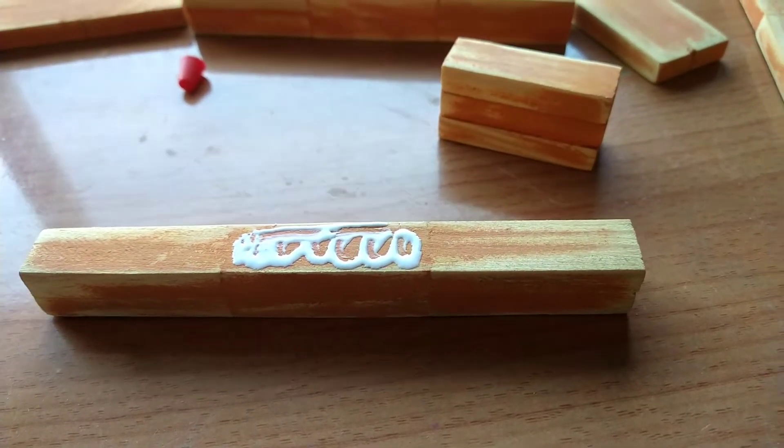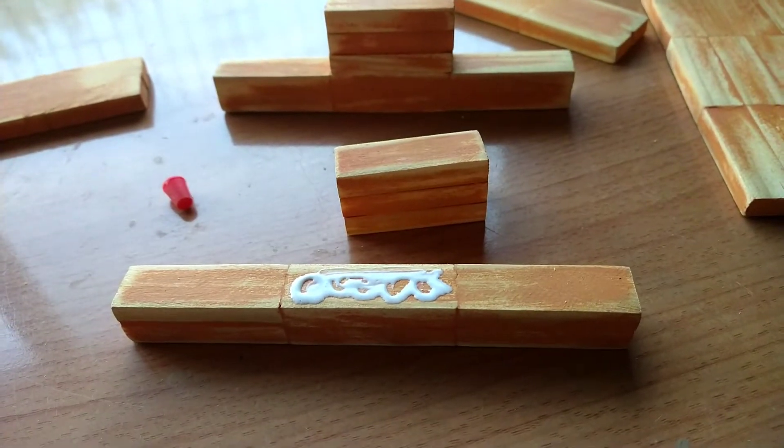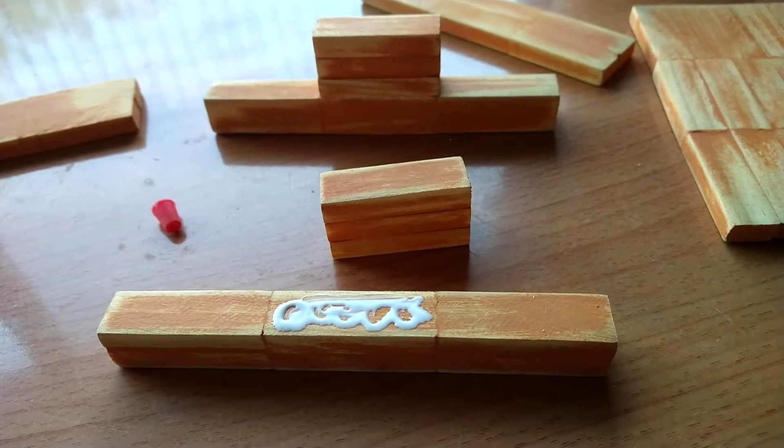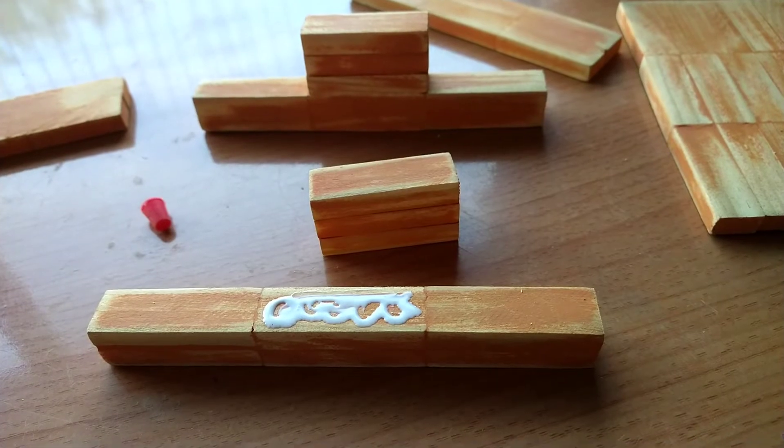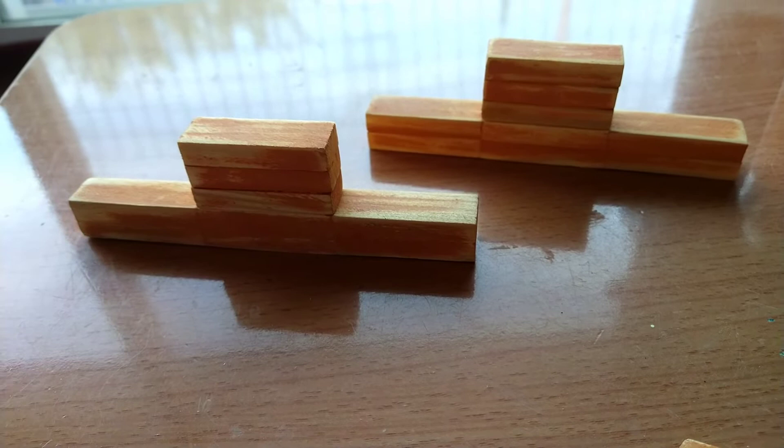Glue the stack of three blocks in the center as you are seeing here. And then repeat on the opposite side. Allow these two sets to dry before moving on to the next step.